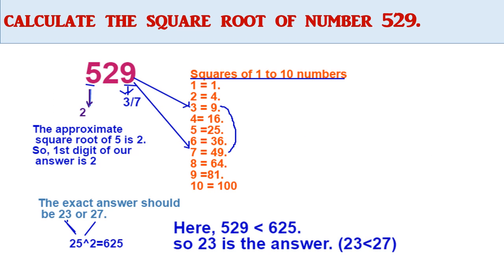For example, let us calculate the square root of the number 529. Here, the unit's place digit is 9. In the squares of first 10 natural numbers, 3 squared equals 9 and 7 squared equals 49. So the unit's place digit of our answer should be 3 or 7.